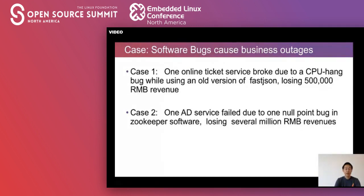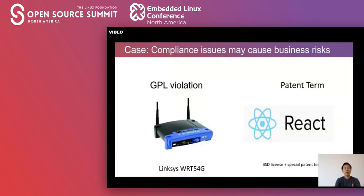Here's another case: one advertisement service failed due to one bug in the ZooKeeper software, losing more than 7 million RMB in revenues. And some cases about compliance issues such as GPL violations and patent terms — for example, WRT 4G and Reactive Pattern issues. You can Google for more information.